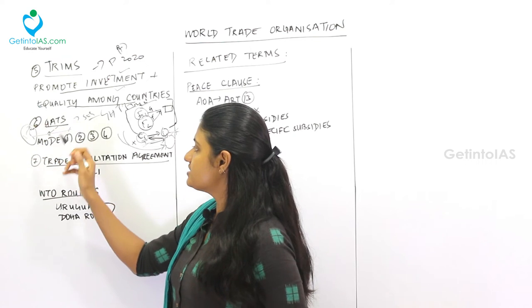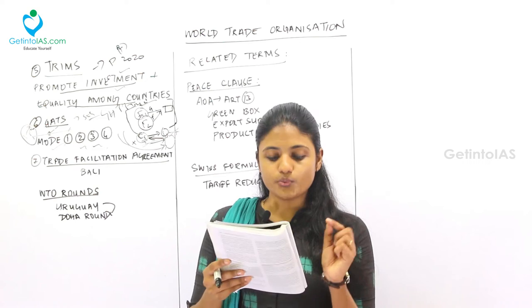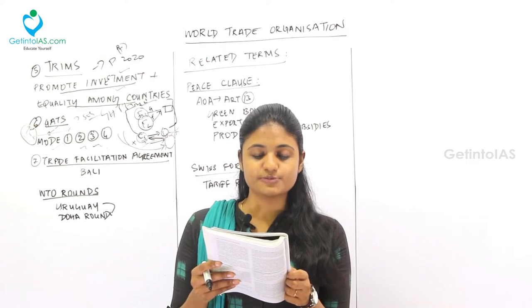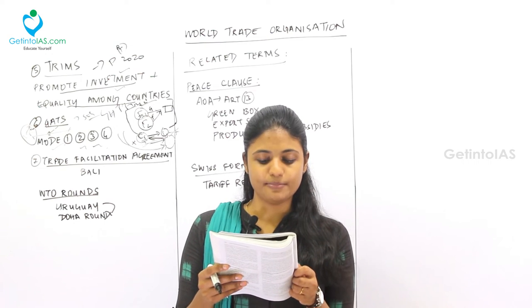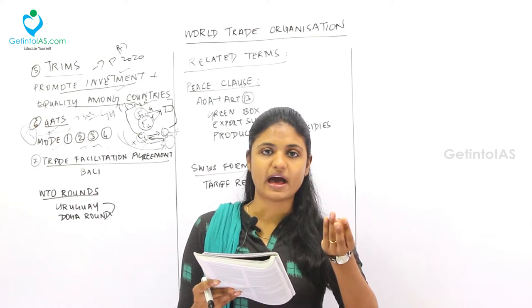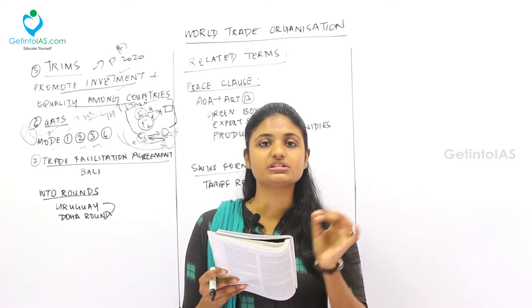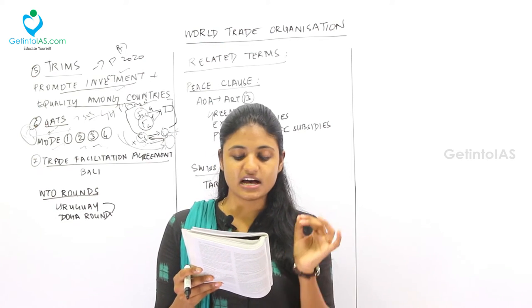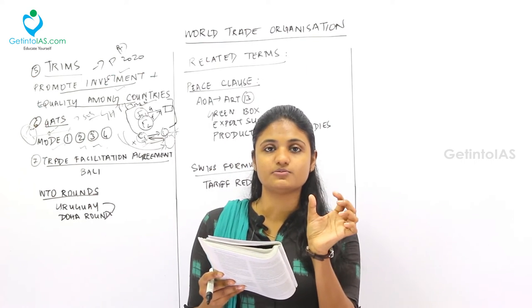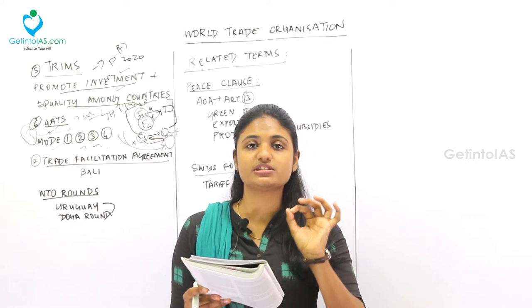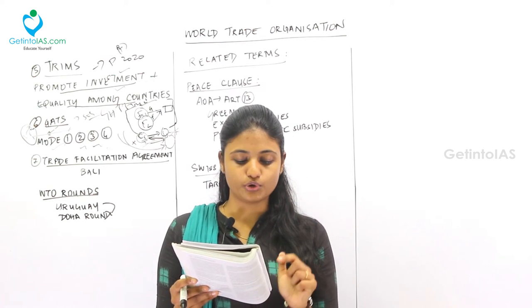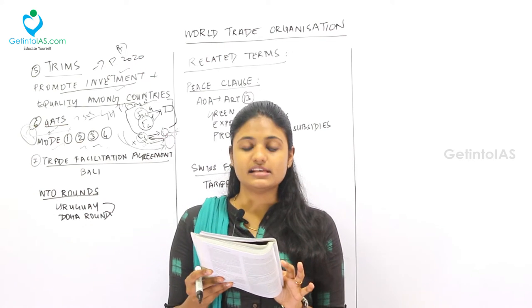Under GATS, services are classified into four modes. Mode 1 is Cross Border Supply — export of services across borders from the domestic country, like BPO and banking services through electronic media, i.e., internet services provided from one country to another. Mode 2 is Consumption Abroad — services availed by citizens of one country in another country, like foreign tours, medical treatment, or studying abroad.